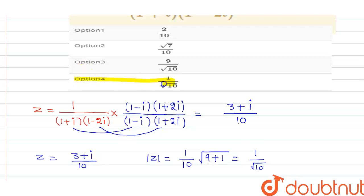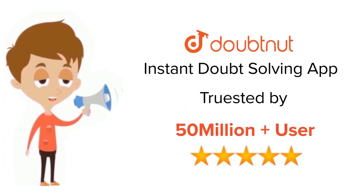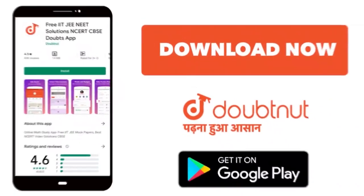So basically from this, our correct option is option 4, which is equal to 1 upon root 10. Okay, thank you. For class 6 to 12, IIT-JEE and NEET level, trusted by more than 5 crore students. Download Doubtnet app today.